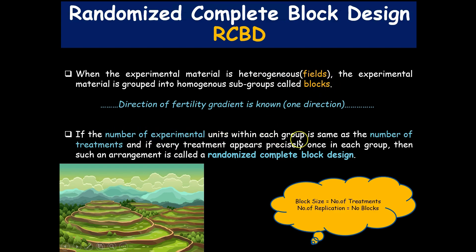If the number of experimental units within each group is equal to the number of treatments, and if every treatment appears precisely once in each group, then such an arrangement is called a Randomized Complete Block Design. The number of treatments equals the block size, and the number of replicates always equals the number of blocks.